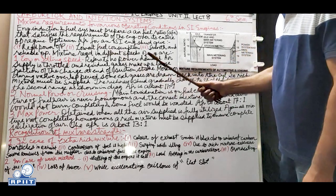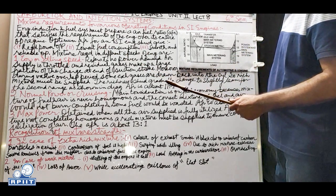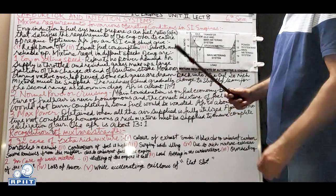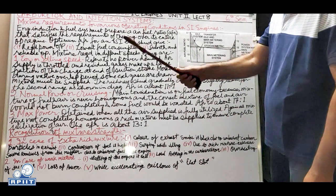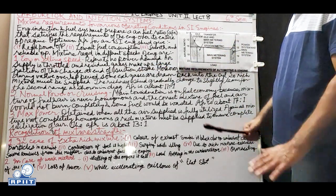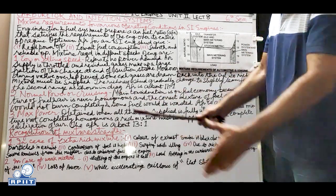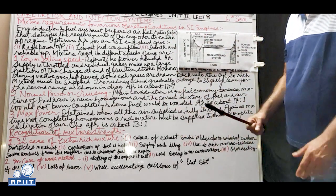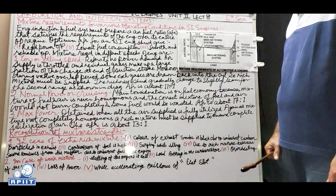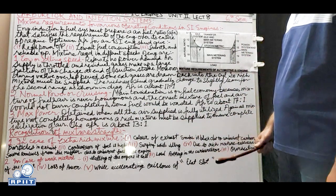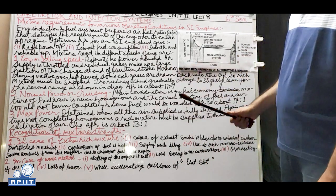Mixture required at different engine speeds - we broadly categorize three speeds: first, the low or idling speed, when your vehicle is just starting to move in first gear or standing still at a traffic light; second, normal power or cruising at around 50 to 60 km/h; and third, maximum power when you press the accelerator fully for maximum speed.